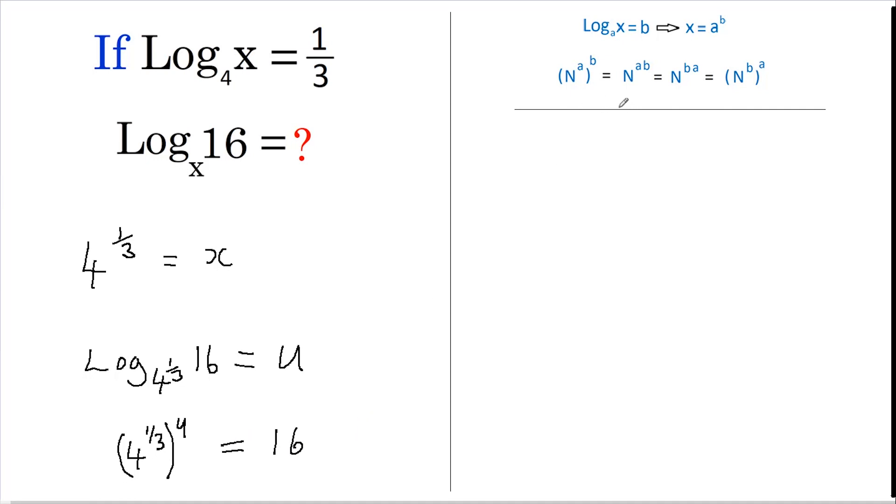And using the second rule now, which states that if you've got a number raised to a power, and that's all raised to another power, then we can write this as a number raised to those powers multiplied together. So, this becomes 4 to the power of one third multiplied by u. And 16, I'm going to rewrite as 4 squared.